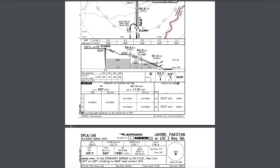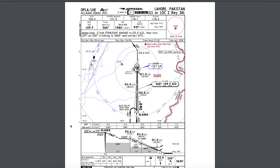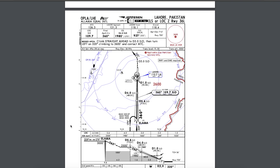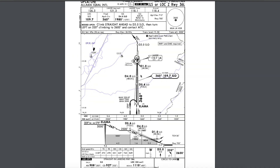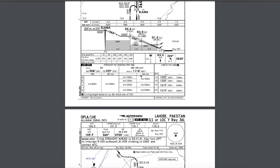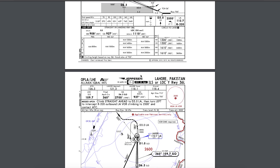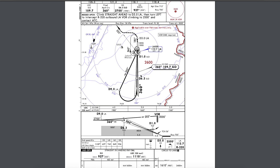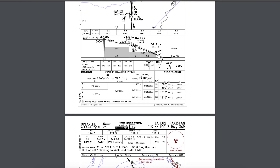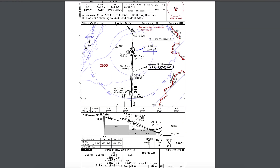Let's start with the last part of our chart discussion, which is known as the approach plates. As I mentioned in the last video, SIDs terminate at a waypoint, and after that you follow your approach plate. Today we will look at the most common ILS approach, which is ILS Zulu 368.